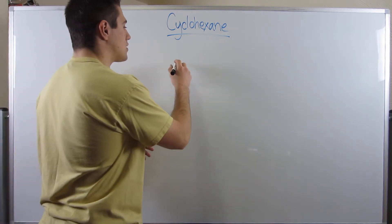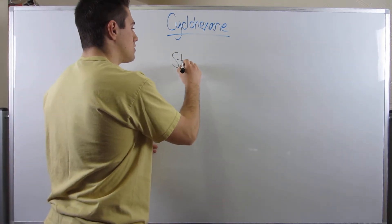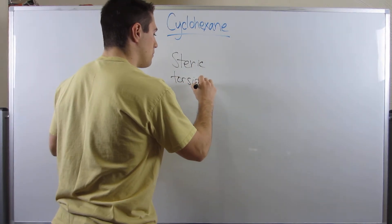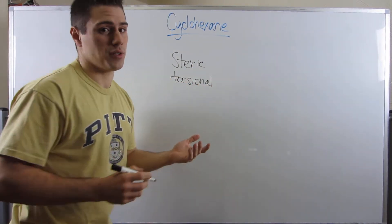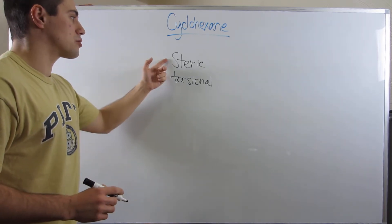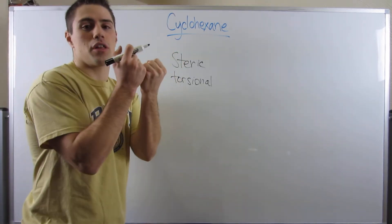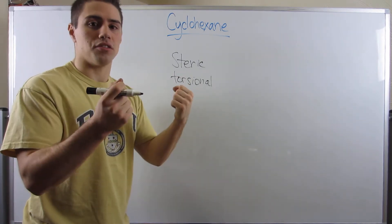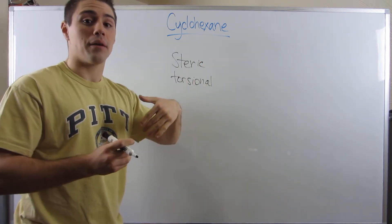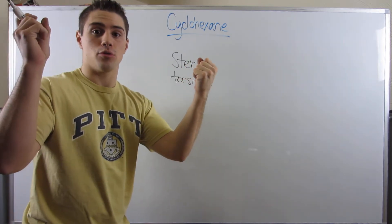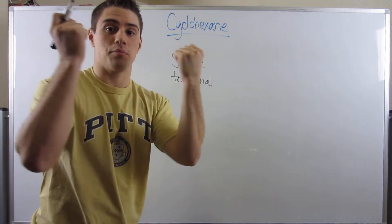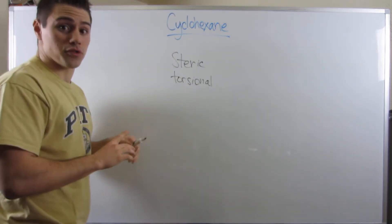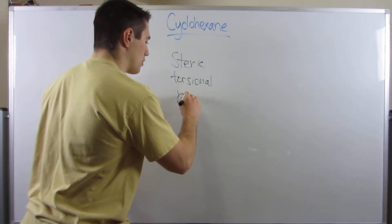In the last video I talked about steric strain as well as torsional strain. Steric strain is that physical bumping into each other of groups, whereas torsional strain is that electron repulsion in the bonds that groups make with other atoms — the electron repulsion is between two sets of bonds. Well, there's a third type of strain. It's called ring strain.